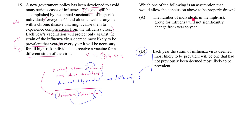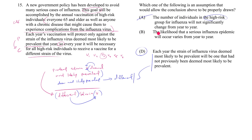Answer choice A says the number of individuals in the high-risk group for influenza will not significantly change from year to year — meaning the size of the high-risk group stays roughly constant, say ten million people year after year. That is completely irrelevant to what we're trying to accomplish. Whether the group has ten million or twelve million people has nothing to do with whether they need a vaccine for a different strain each year.